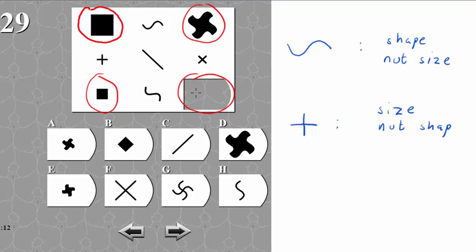So we can rule out a lot of these options down here. This one is not curved. This one is not curved either. And this one is not small. And these are not small as well.